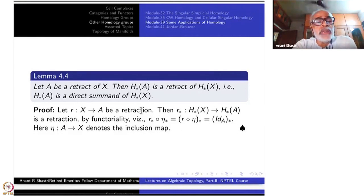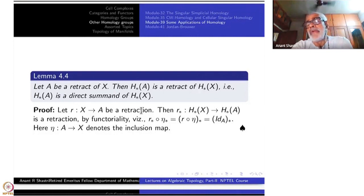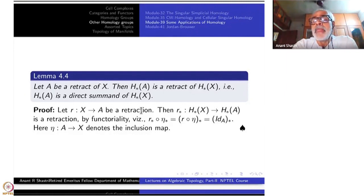When A and X are topological spaces and A is a subspace of X with A a retract of X, all that you have is a continuous function R from X to A which is the identity on A. R is the continuous function from X to A, I is the inclusion map, and R composed with I is the identity of A. When you pass to homology, it gives you that H*(A) is a retract of H*(X), meaning there is a homomorphism from H*(X) to H*(A) induced by R.